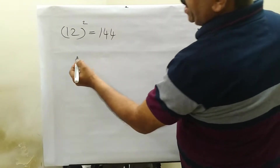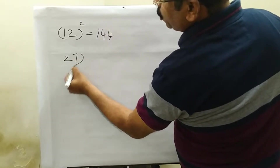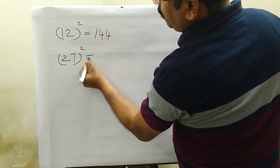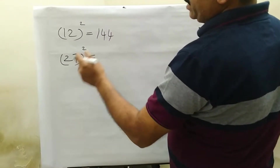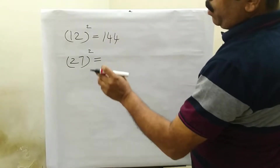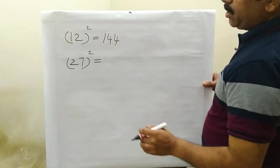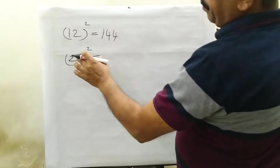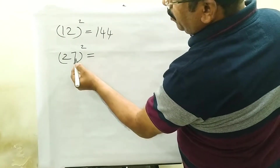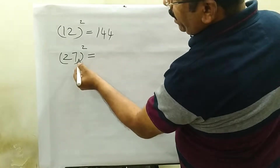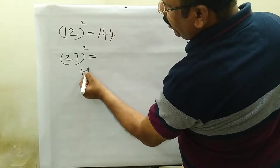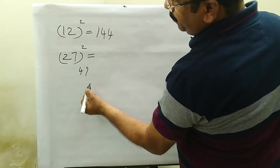Let's see — if we find 27 squared, we will find it in five seconds. For example, if we find 27 squared, we will find it as 729.